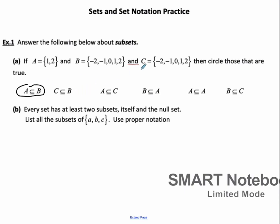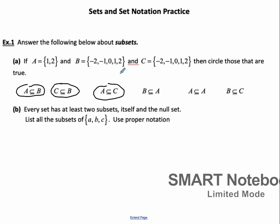And the next one, if you look closely, B and C have exactly the same numbers in there. So C is a subset of B, because everything in C is also in B. And that means A is also a subset of C. B is not a subset of A, because B has 5 elements and A has 2 elements, so that's impossible.